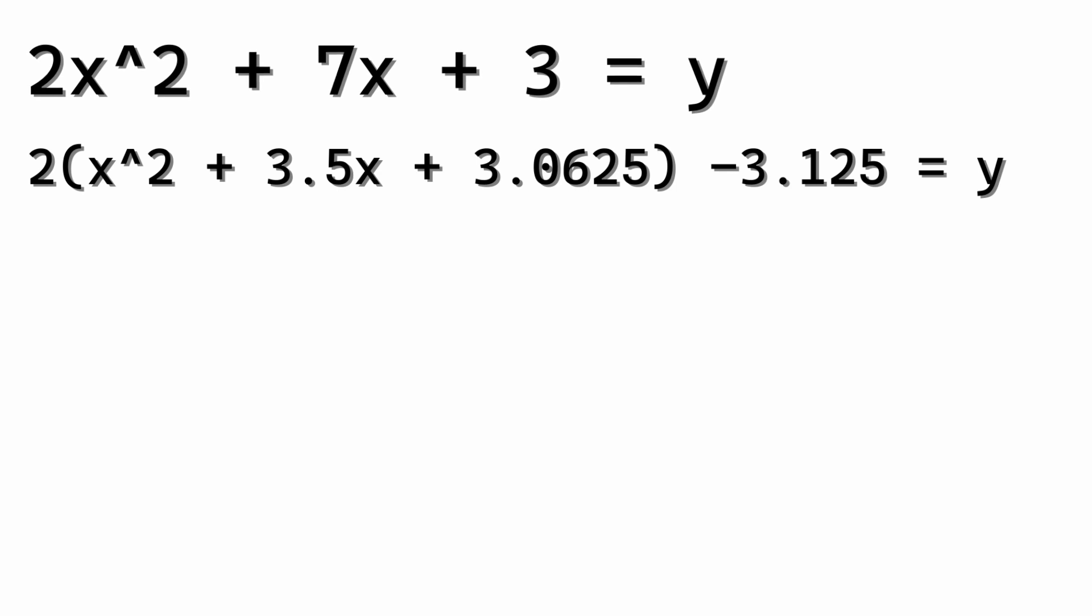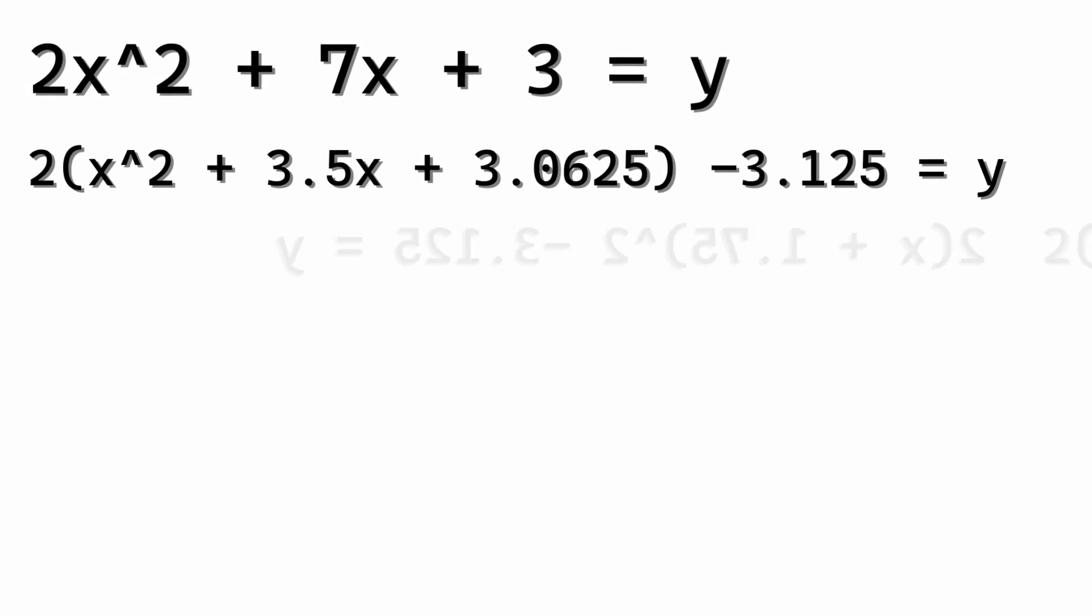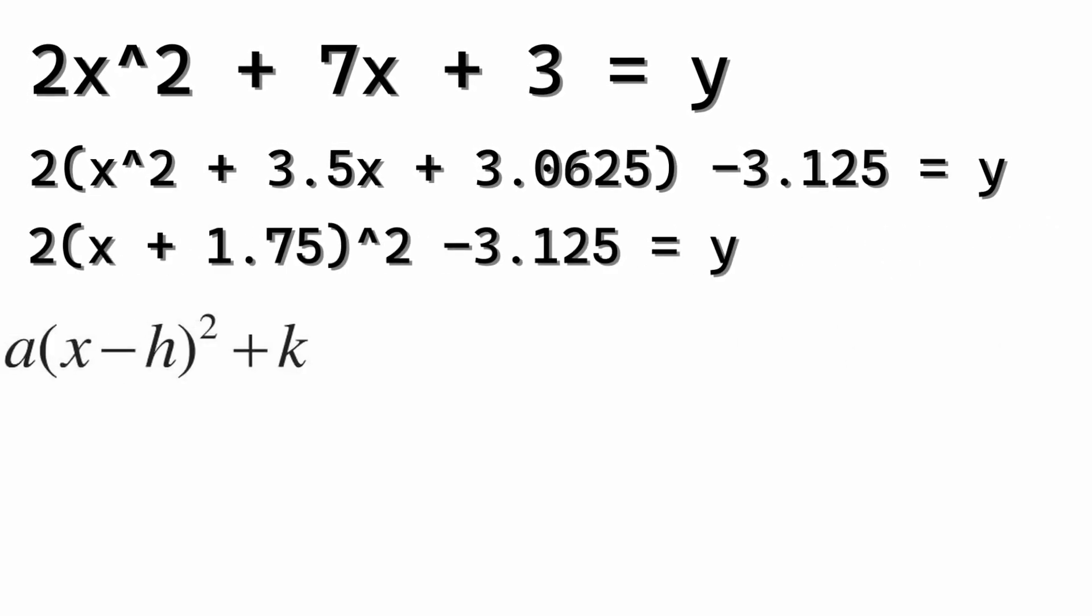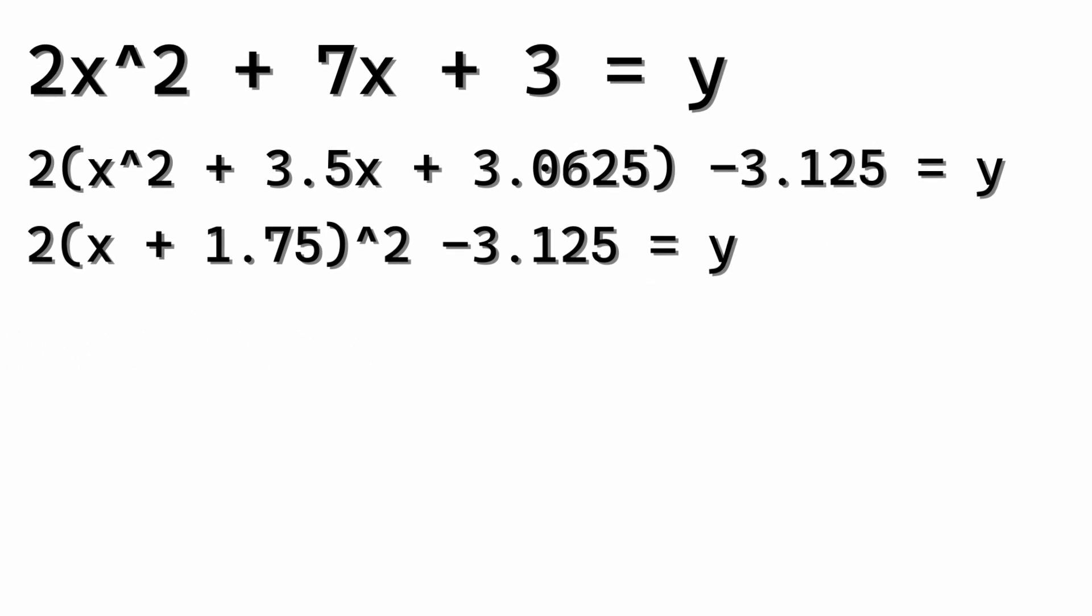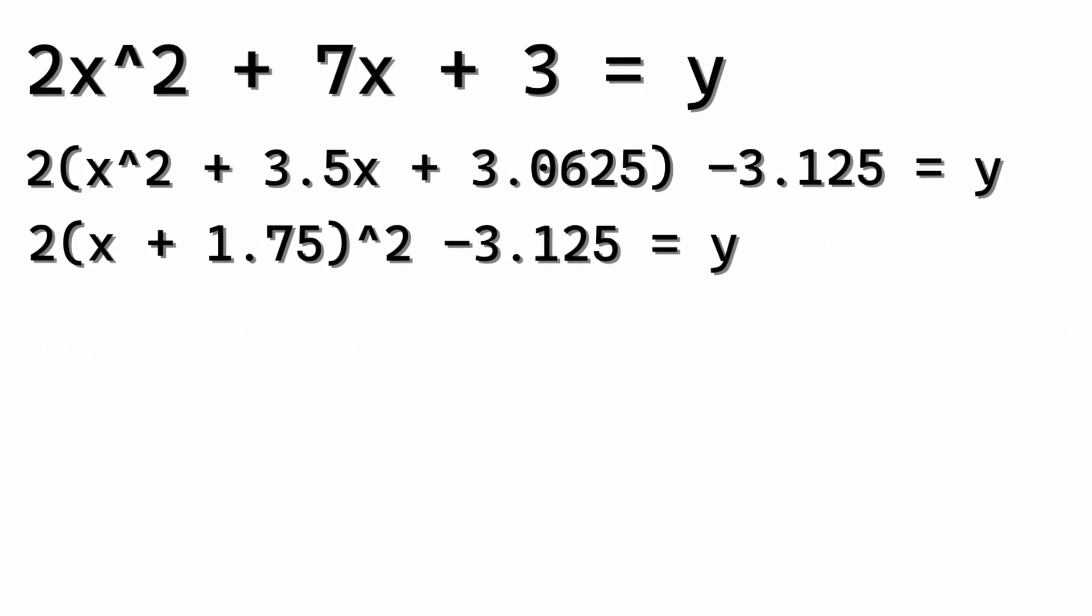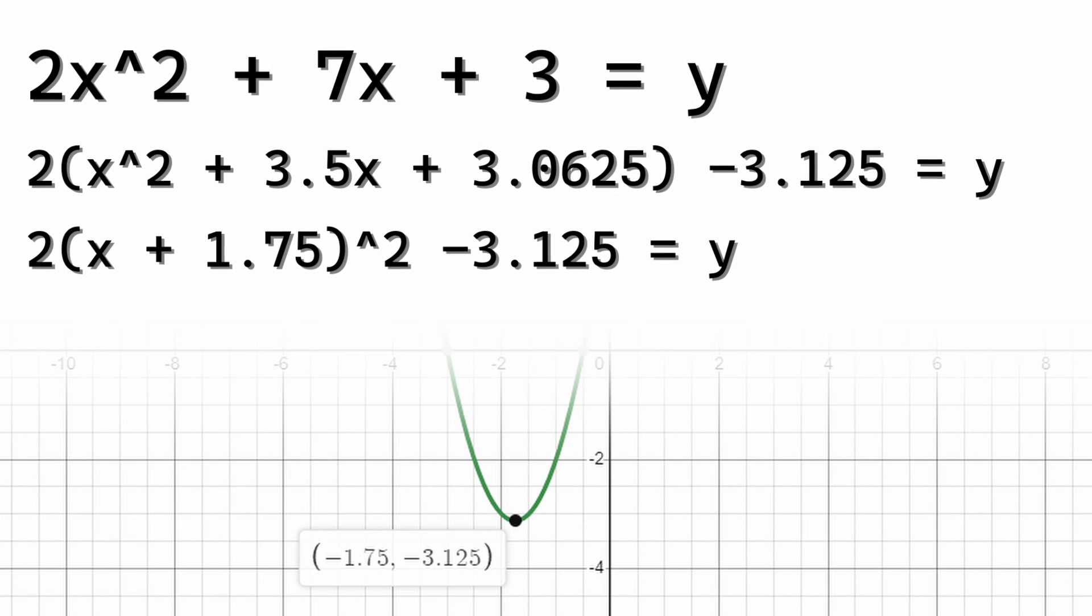Let's try an example. Let's use that same equation from earlier. 2x squared plus 7x plus 3. It can be rearranged in brackets like this. Then raised to the second power. And ta-da! That's vertex form right there. Meaning that the coordinates of this parabola would be negative 1.75 and negative 3.125.